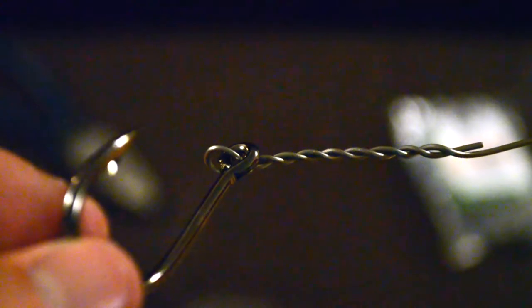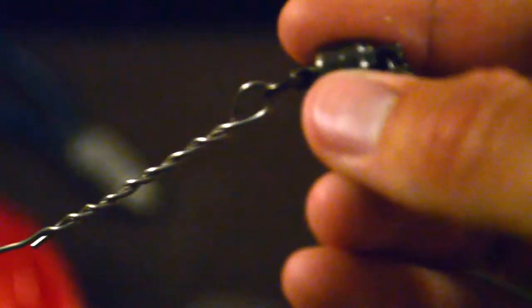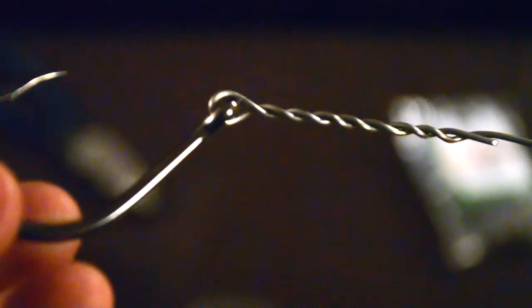So, here's the hook end. It's done the exact same way as the swivel end. And now that we have the swivel as well as the hook on, we're gonna attach the single-strand, 40-pound test American fishing wire on.